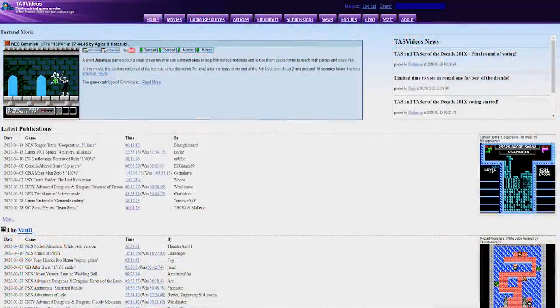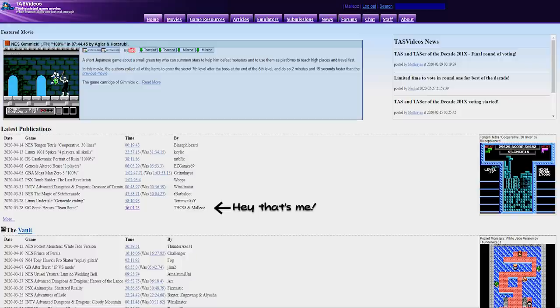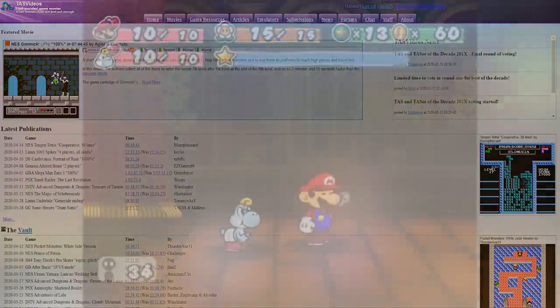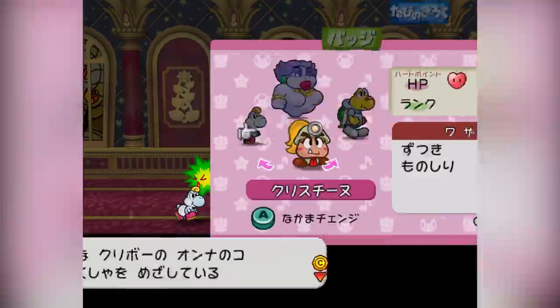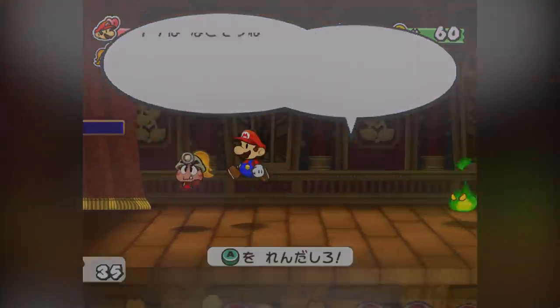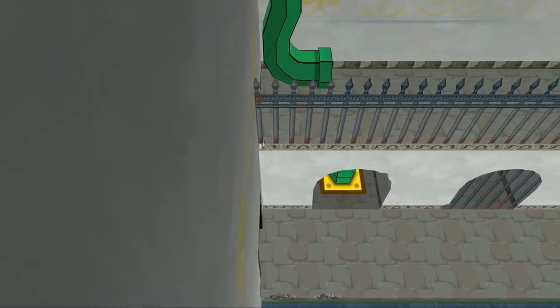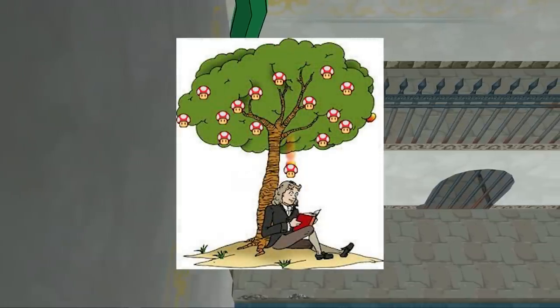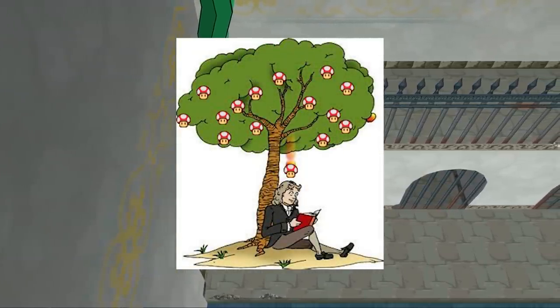If you aren't aware of what a tool-assisted speedrun is, be sure to check out tasvideos.org to learn more information. Basically, it's a demonstration of what a perfect speedrun could look like, performed by slowing down the game and rewinding time over and over again until sections are seemingly perfect. Well, thanks to Isaac Newton, the Paper Mario TTYD TAS is just a bit more optimal, so let's derive how we got to this point.